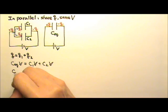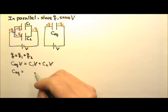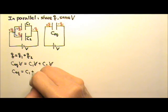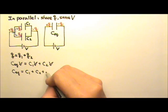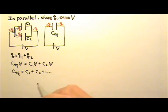And that gives us this equation for finding the equivalent capacitance when we have capacitors in parallel. If we have more than two capacitors, we can just keep adding the capacitance.